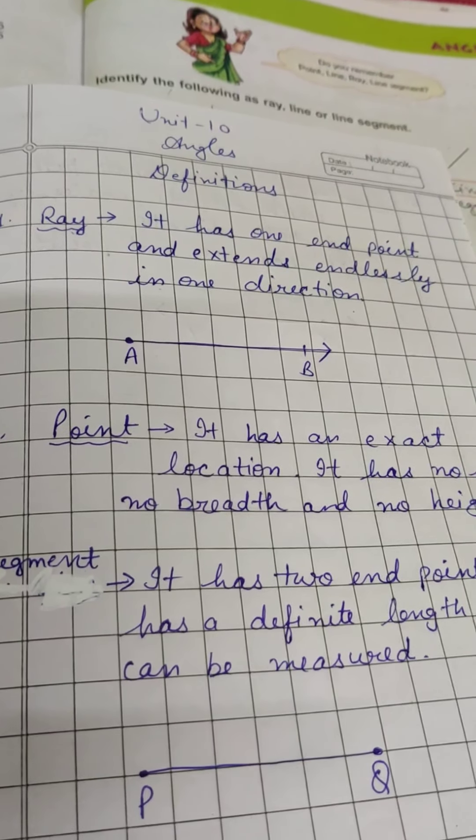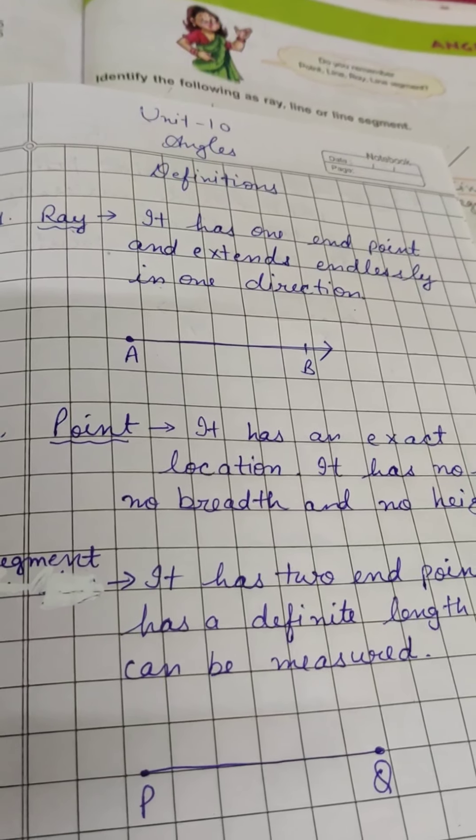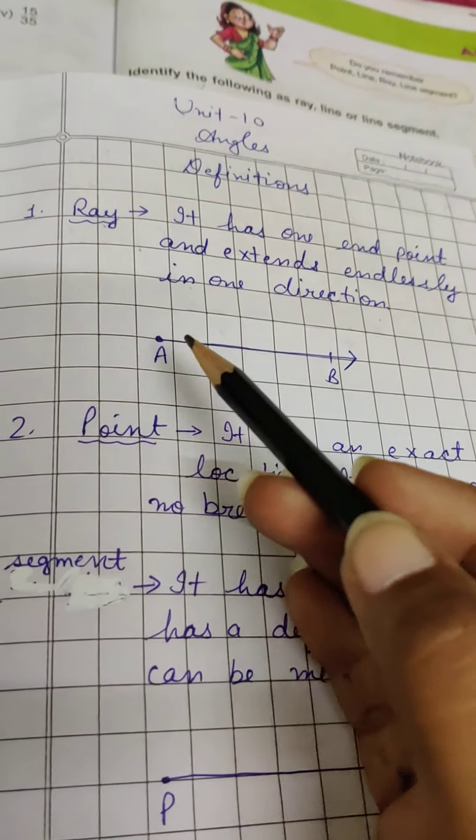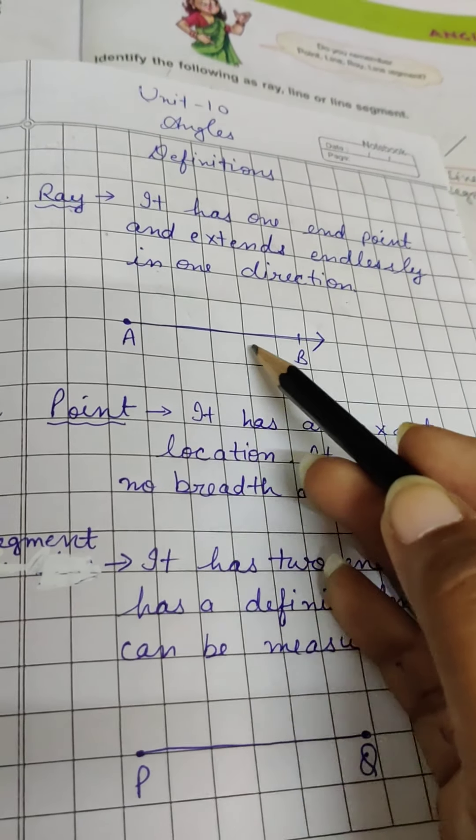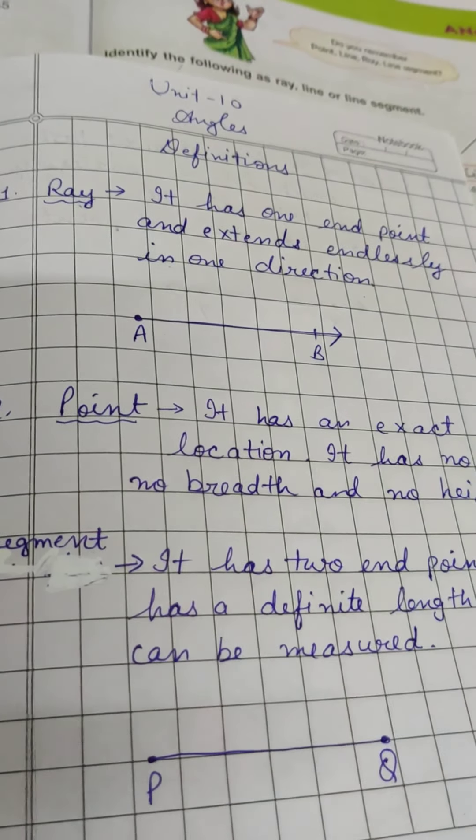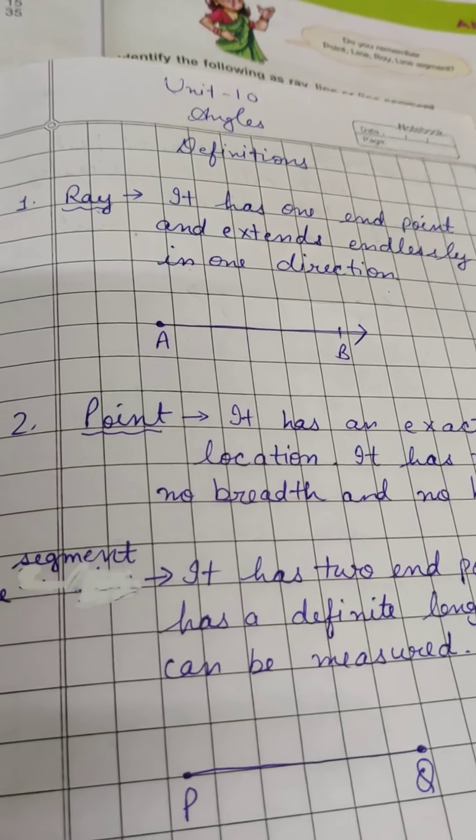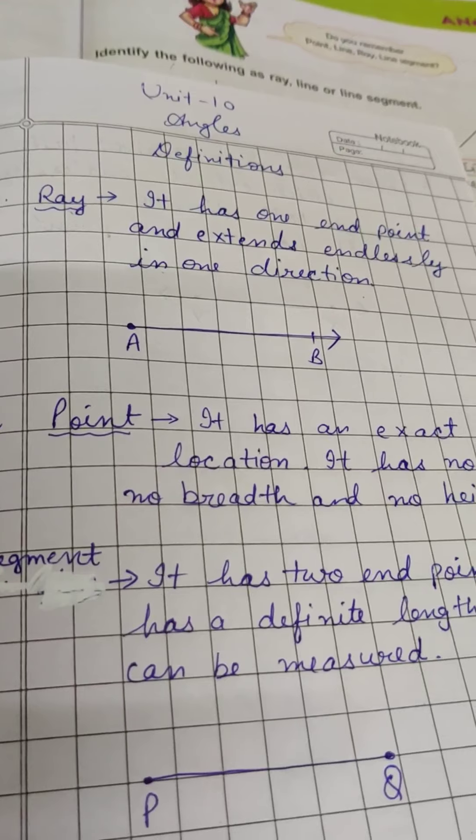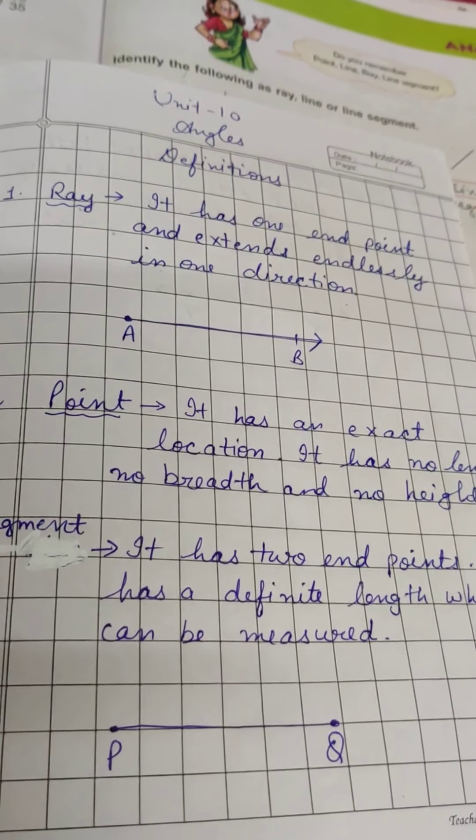Firstly, we have ray. Ray has one end point and extends endlessly in one direction. We know one end point and it continues continuously. We don't know the end point. The arrow means that we don't know the end point. Clear? So this is the shape of a ray.